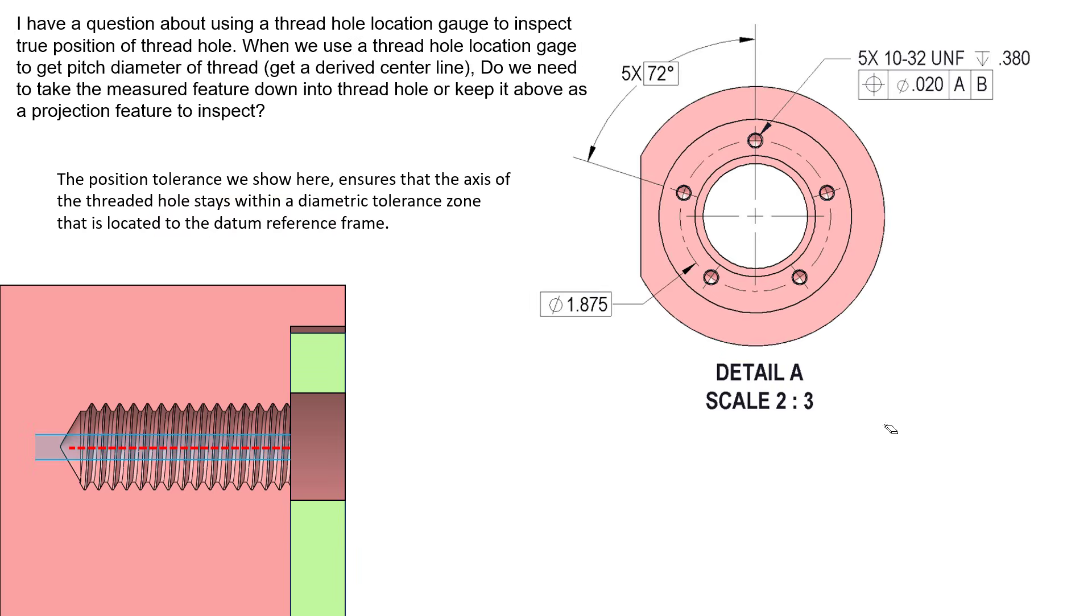Let's take a look at this example part here. We have a quick screenshot from the drawing. Obviously this is not a complete drawing, but what we see here is we have five threaded features and they have a position to A and B diametrically of 20,000s. We have a 10-32 threaded feature here and the depth of those holes is 0.380. We can see that we have this red part and there's a green collar that gets bolted into this little slot.